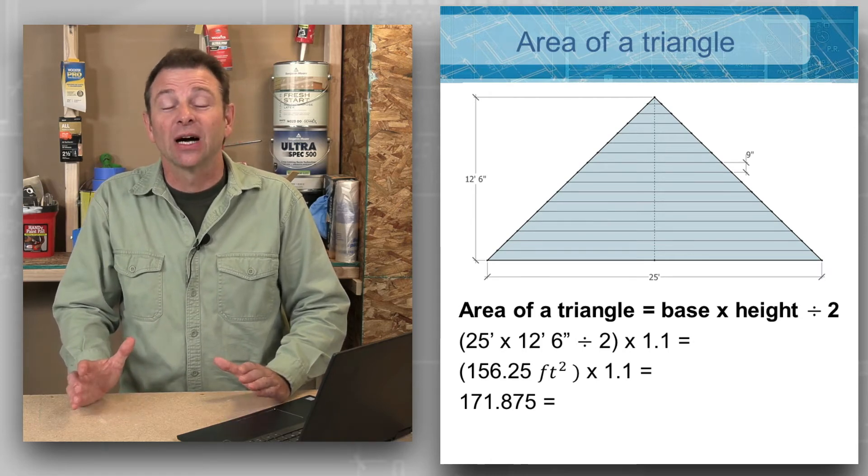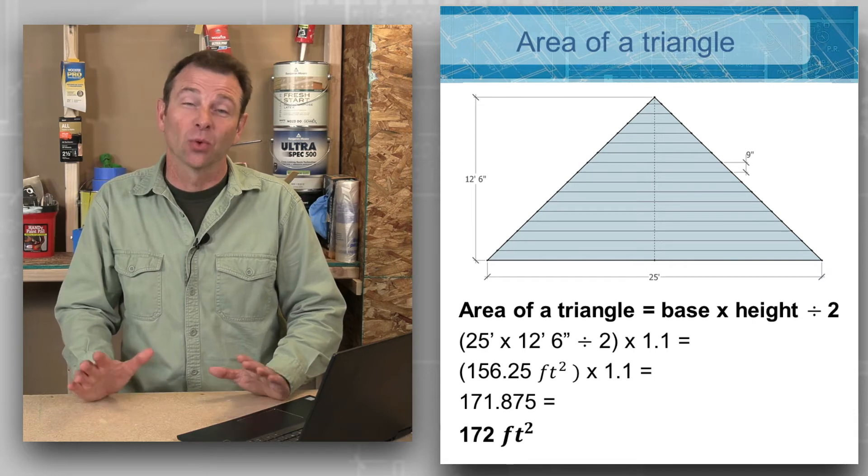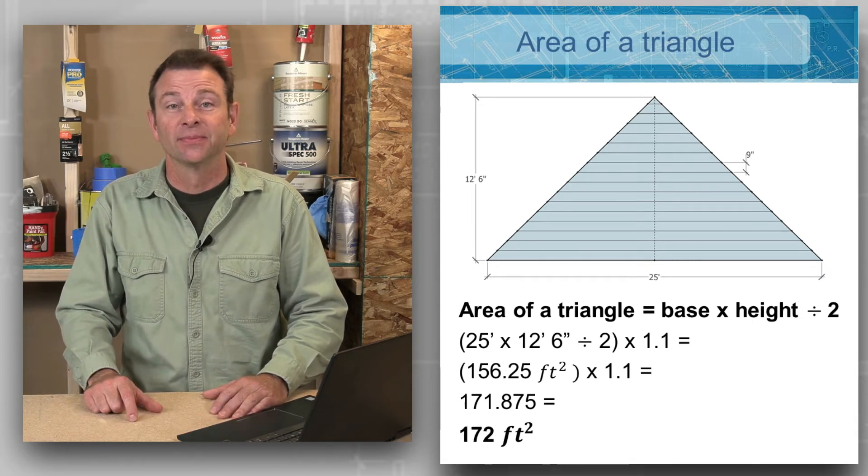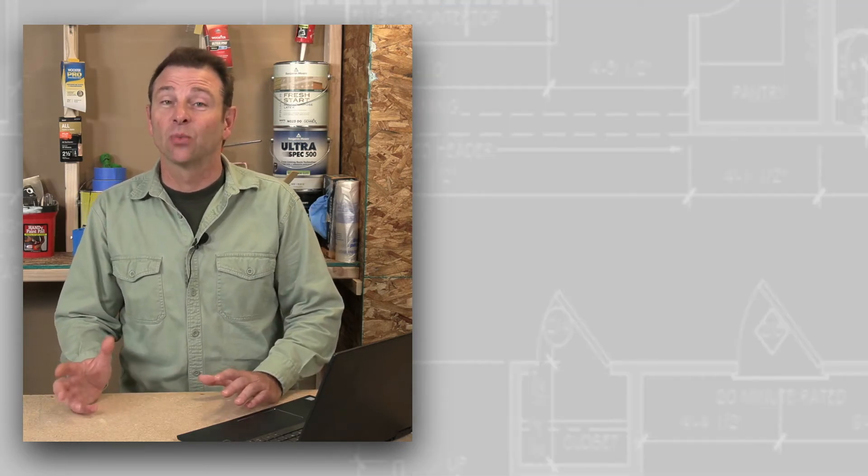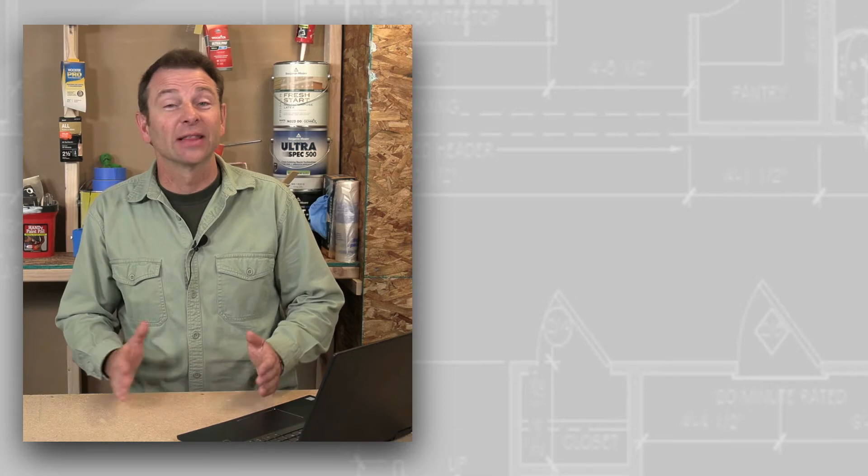The area of a triangle is one thing to calculate, but with a lot of construction materials there are other things to consider like this overlap of this siding.